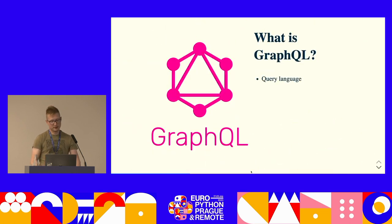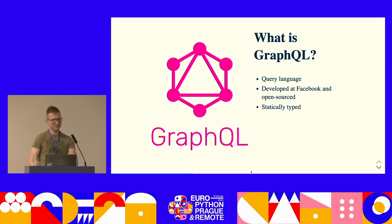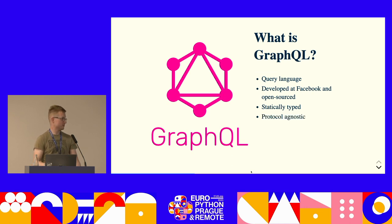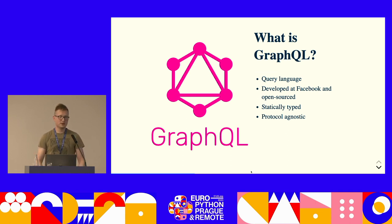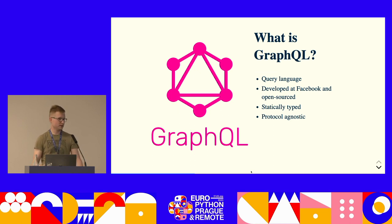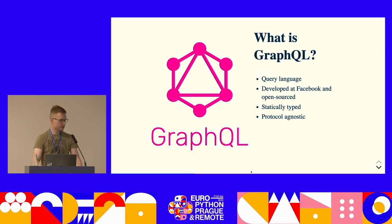GraphQL is a query language developed by Facebook and open-sourced. First of all, it's statically typed — a main feature that is really useful, especially when your front-end team is in love with TypeScript, because there is a lot of cool tooling that allows them to use those static type systems. It's also protocol agnostic, which means you can format messages using GraphQL but exchange them over any medium — HTTP, RabbitMQ, or any other message exchange system.